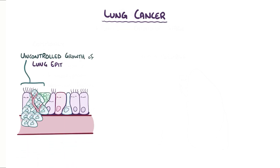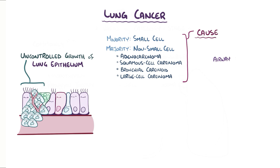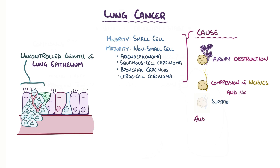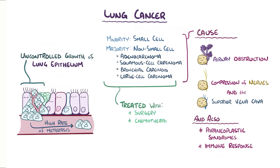As a quick recap: lung cancer is the uncontrolled growth of respiratory epithelial cells. The minority are small cell cancers and the majority are non-small cell cancers, which are further categorized into adenocarcinoma, squamous cell carcinoma, bronchial carcinoid, and large cell carcinoma. Common issues for all lung cancers include airway obstruction, compression of nearby nerves and the superior vena cava, paraneoplastic syndromes, and an immune response causing symptoms like weight loss, fevers, and night sweats. Overall, lung cancers have a high rate of metastasis to other organs and are treated with a combination of surgery, chemotherapy, immunotherapy, and radiation, depending on the situation.